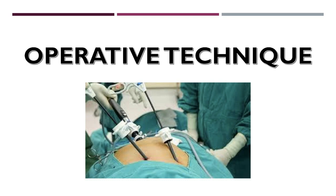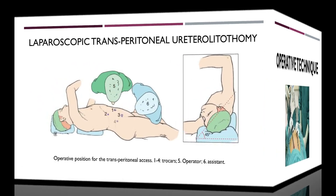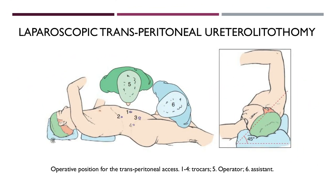Moving on to the operative technique. The patient is placed in lateral decubitus, chopper under the belly. For the placement of the trocars, we start with an open incision above the umbilicus at the level of the external edge of the rectus muscle, placing a trocar of 10 mm. The two other trocars are introduced in triangulation, one of 10 mm and one of 5 mm. A final trocar of 5 mm can be added for the exposure of the operating site.